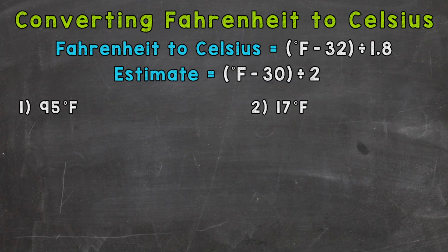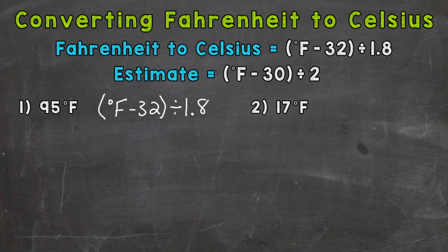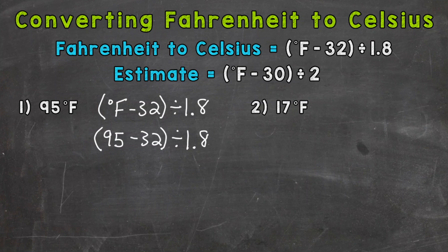Let's jump into number one where we have 95 degrees Fahrenheit. The first thing we want to do is rewrite the formula we're going to use to convert this. So degrees Fahrenheit minus 32, divided by 1 and 8 tenths. Then we plug in the degrees Fahrenheit we want to convert — 95 degrees Fahrenheit — into our formula. So: 95 minus 32 divided by 1 and 8 tenths. And now we're ready to solve.